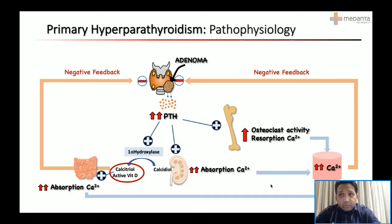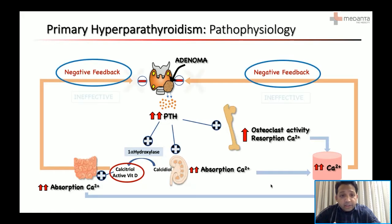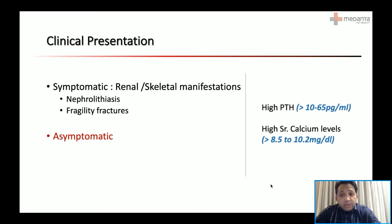What happens when you have an adenoma? An adenoma is a benign tumor which leads to hypersecretion of parathyroid hormone. All the organs at which the parathyroid gland works are hyperstimulated, resulting in increased calcium levels in the blood. The negative feedback system is now ineffective because adenomas are autonomous and hyperfunctioning. This leads to increased parathyroid hormone and high serum calcium, causing symptoms related to the renal and skeletal system — nephrolithiasis and fragility fractures. About 33% of cases are also asymptomatic, usually in the initial stages when parathyroid hormone is excessive but serum calcium is not yet high enough to produce symptoms.